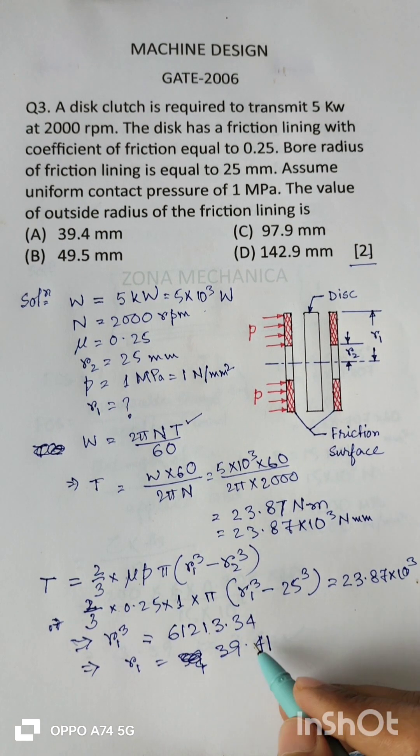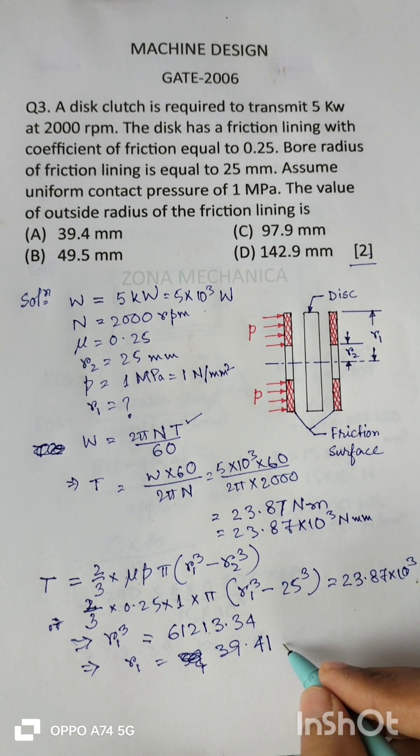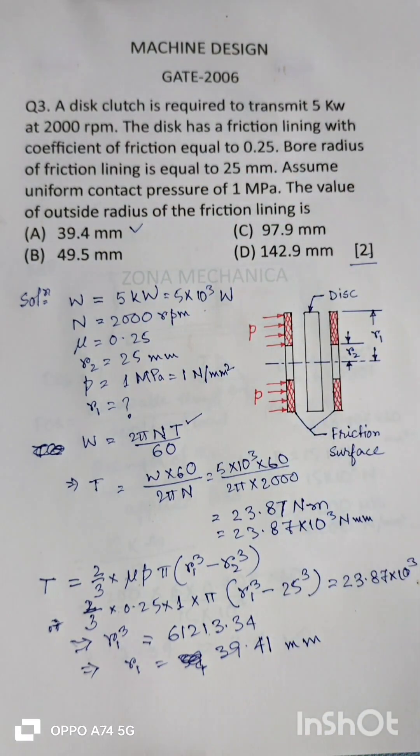So this is the value of outer radius of the friction liners. This will come in mm. Clearly it's matching with option A, 39.4, so option A is the correct answer. Hope you have understood. If you are enjoying, please do share with your friends. If you are new to my channel, please do subscribe.